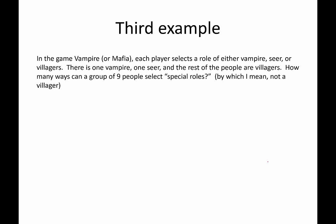One more example before we get to the formula. In the game of Vampire or Mafia, each player selects a role of either vampire, seer, or villager. There is one vampire, one seer, and the rest are villagers. If there are nine people playing, how many ways could people be selected for the two special roles — vampire and seer? One of the nine is chosen as vampire, leaving eight possible seers. So 9 times 8 equals 72 — there are 72 different combinations of two people having special roles in a game of nine players.